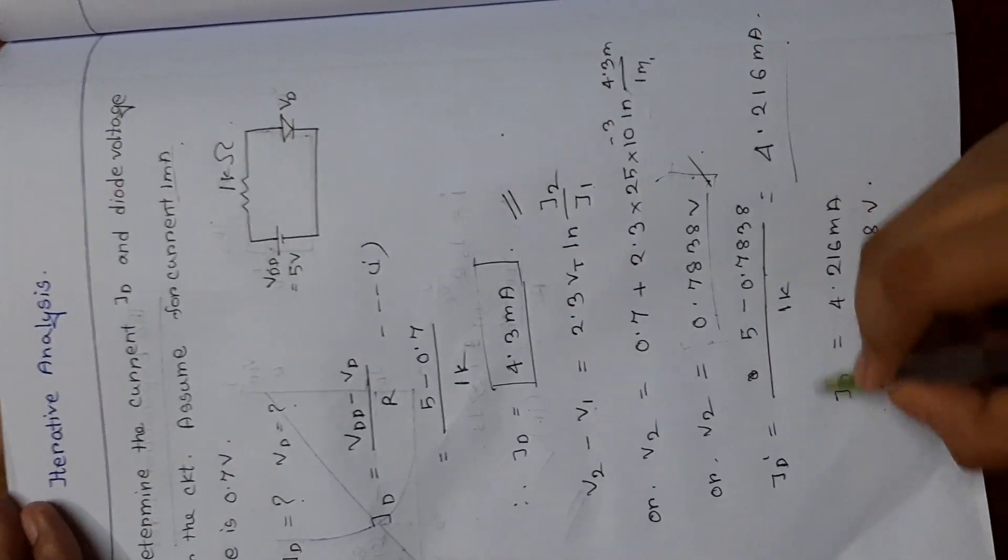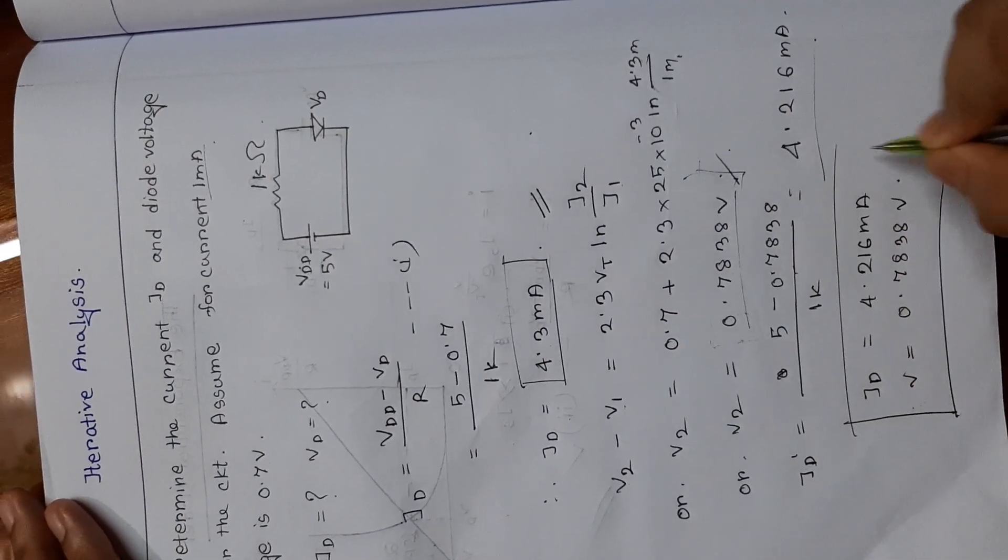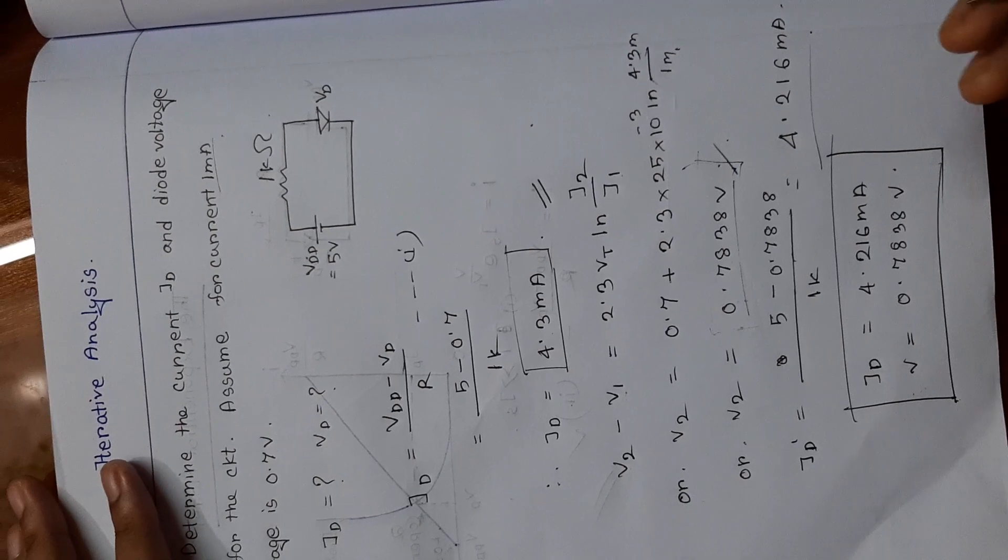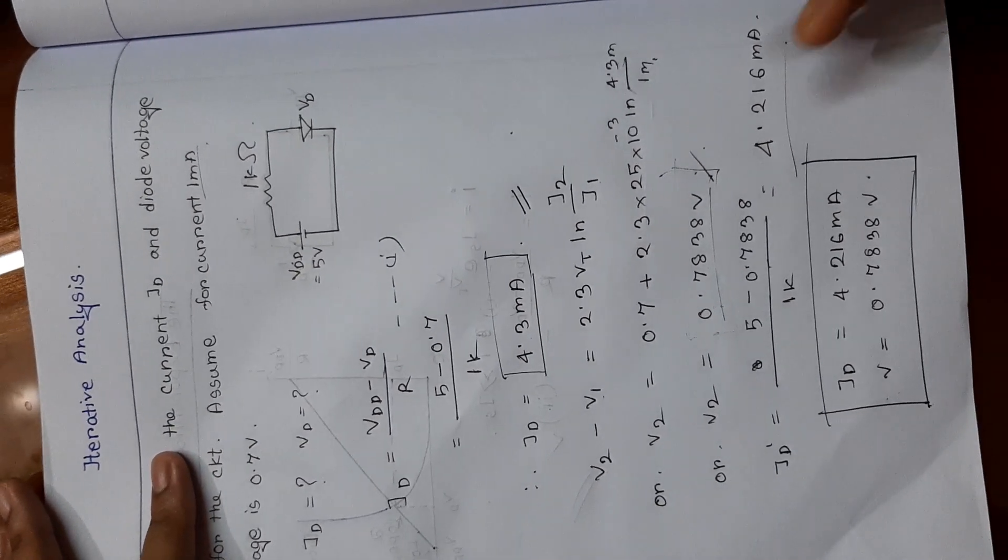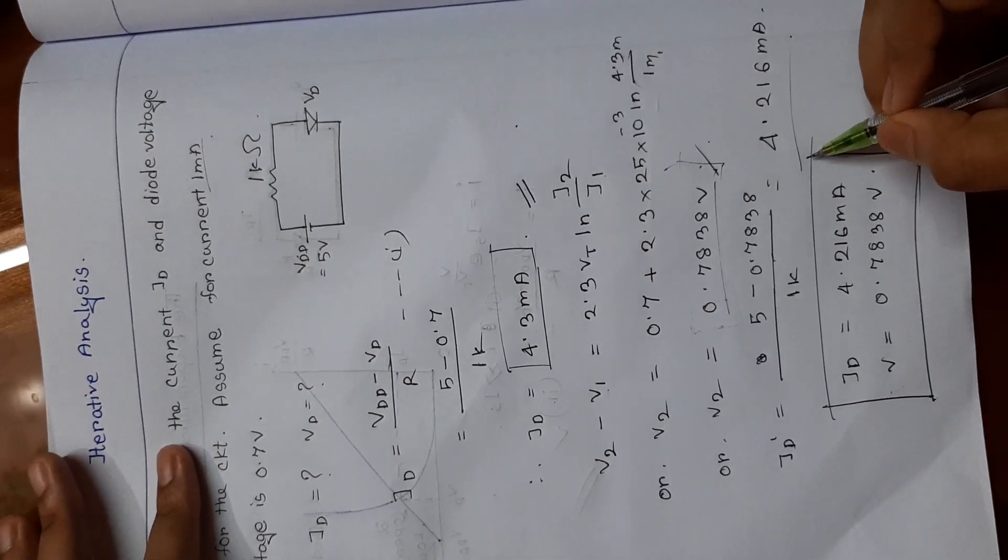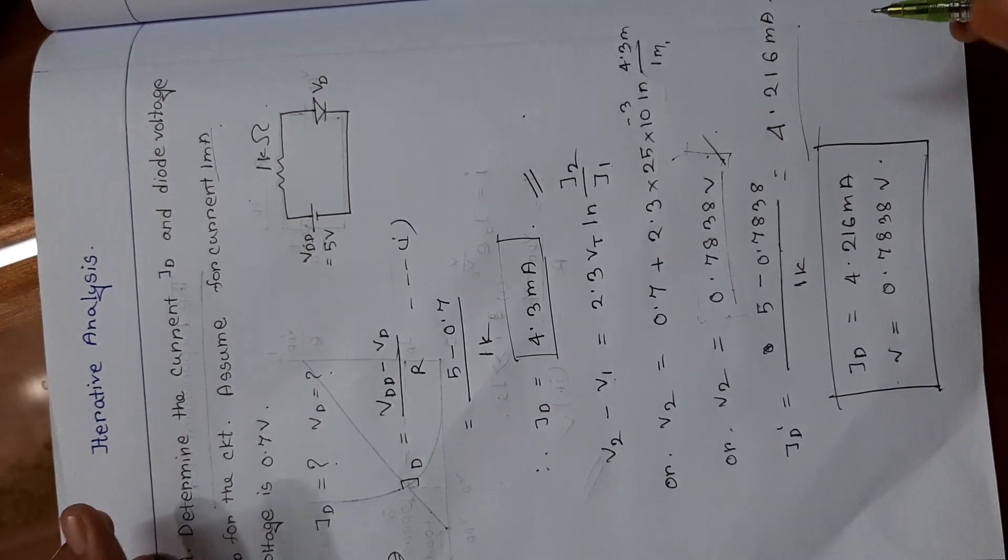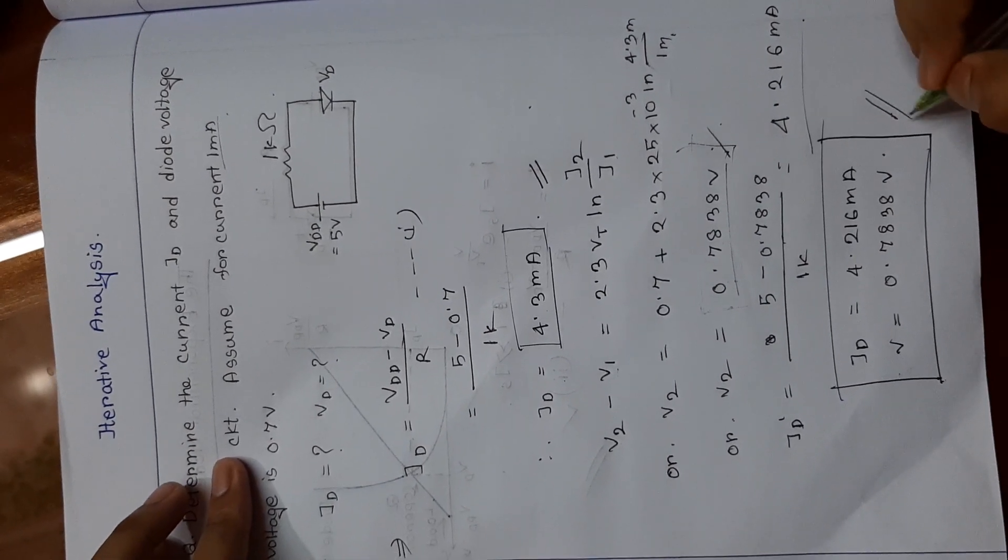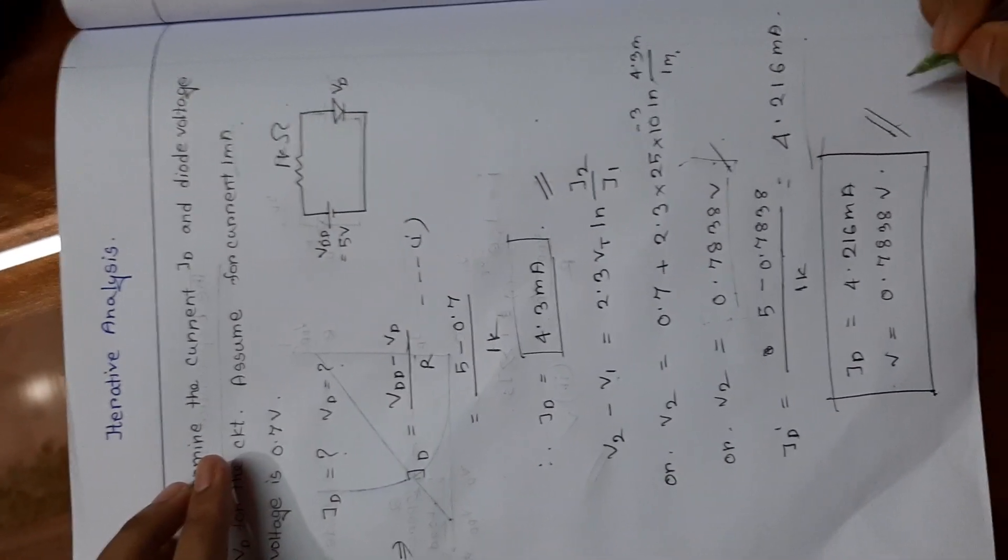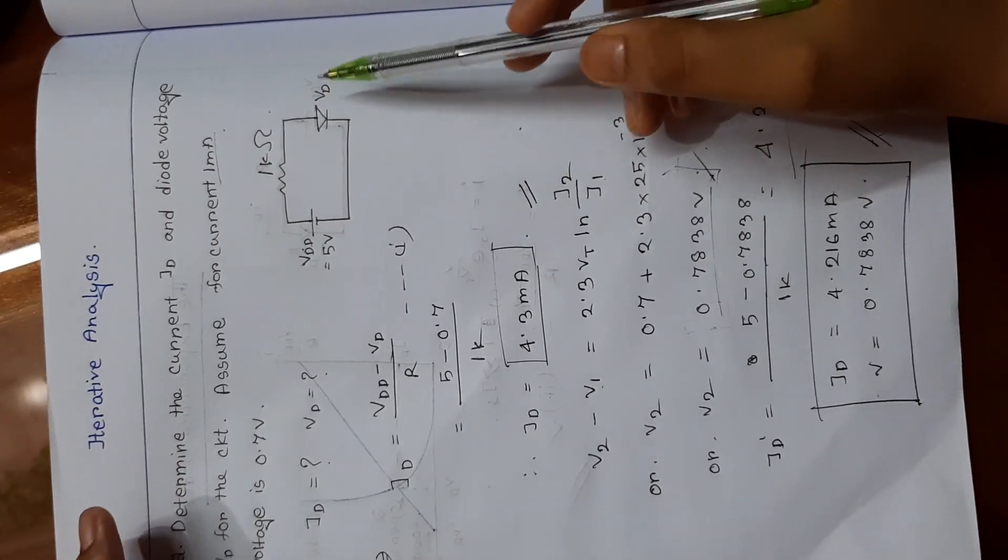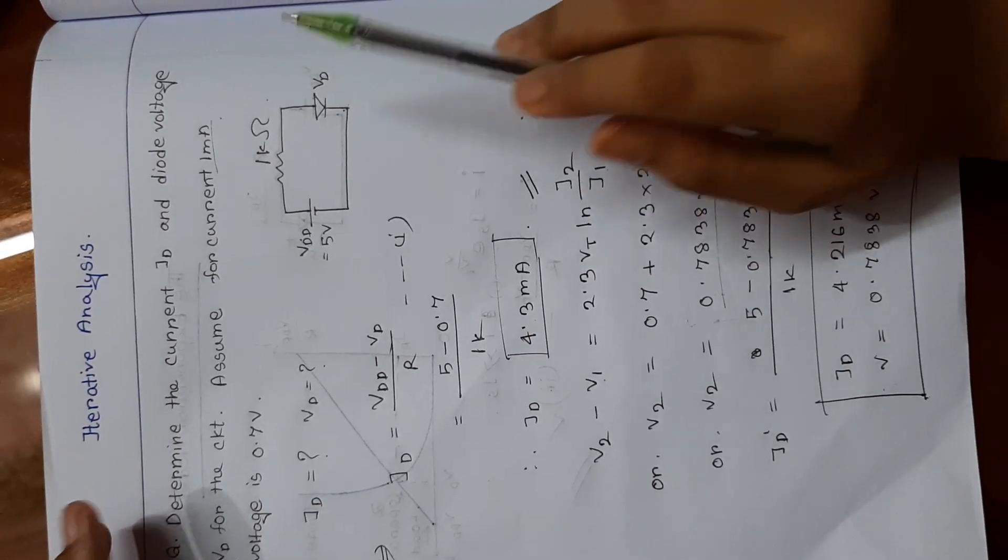So by iteration analysis we can find these two values. If we want to go furthermore, we have to remind that when the answer is approximate to the question, then we have to stop. And I have stopped in this part. So this is how we can solve diode problem by using iterative analysis.